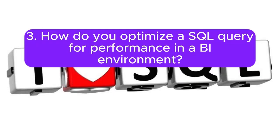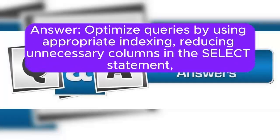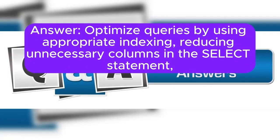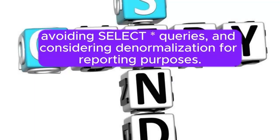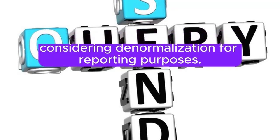Question 3: How do you optimize a SQL query for performance in a BI environment? Answer: Optimize queries by using appropriate indexing, reducing unnecessary columns in the SELECT statement, avoiding SELECT * queries, and considering denormalization for reporting purposes.